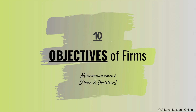Welcome back to another video from 11 Lessons Online. I'm covering microeconomics today — specifically the objectives of firms. We're moving on to the next part of microeconomics, away from demand and supply and into firms and the decisions they make. This is the second part of microeconomics; after this you just have market failure left. This part is called market structure.